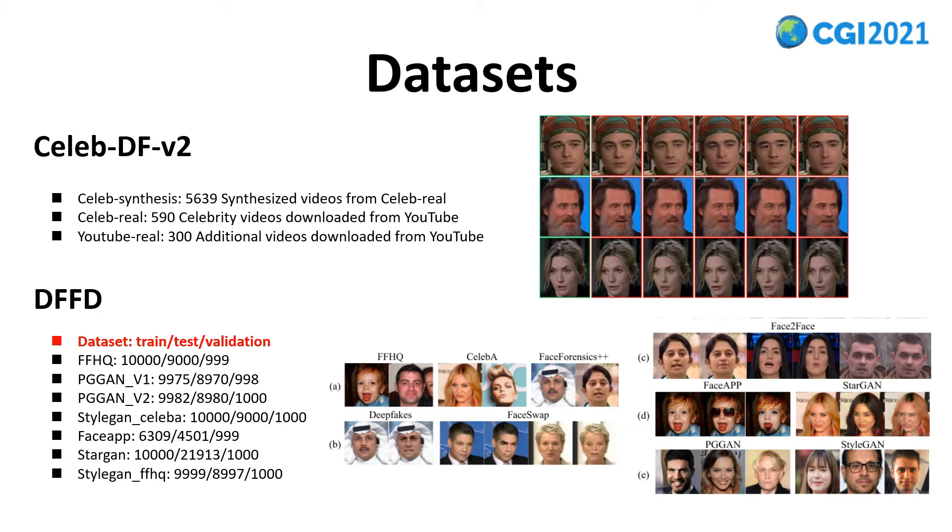The other one is DFFD, which contains various GAN images. The number of training sets, test sets, and validation sets of each type is shown in the slide.